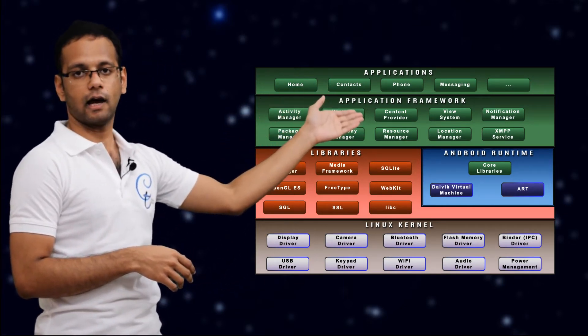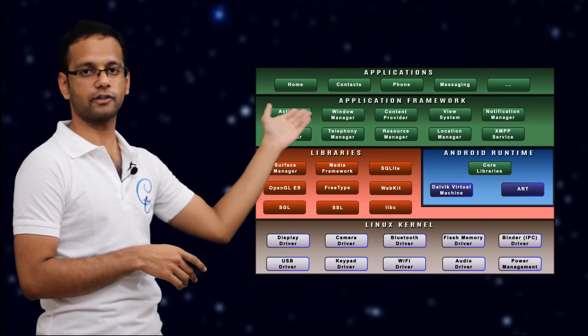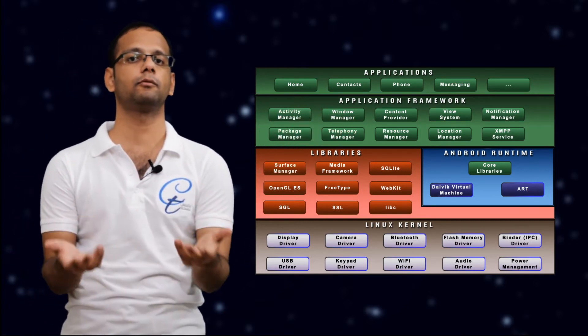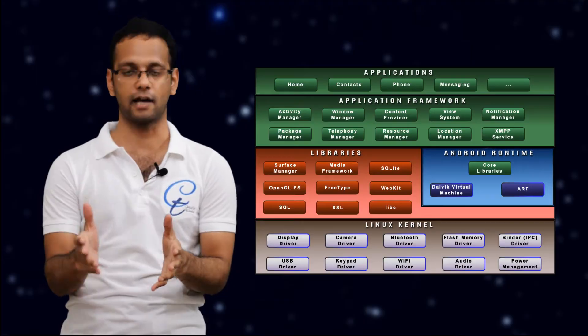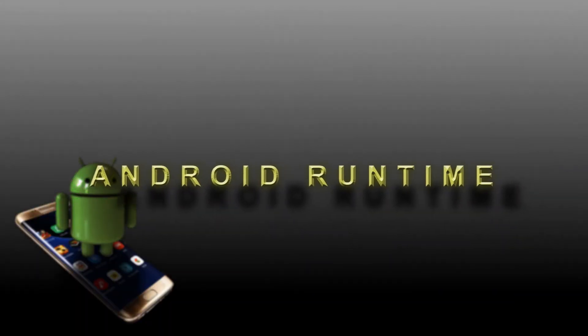Dalvik and ART are actually two different things that cannot coexist. The Android runtime is the execution environment of an operating system where the actual execution of the code takes place — whether it's bytecode or assembly code. If it is bytecode, it will be converted into machine code; if it's already in machine code, it will be directly executed. It is pushed into RAM so that the CPU can execute it.